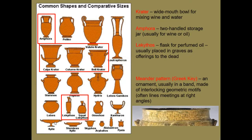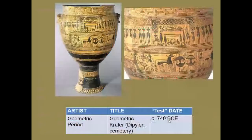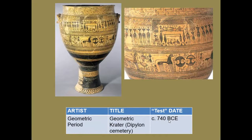The meander pattern — sometimes called the Greek key — is found on many early Greek examples. It's a pattern of right-angled lines moving in and out around each other, somewhat resembling old-fashioned keys. You can see it clearly in our first piece to know for the test: the Geometric period crater from the Dipylon cemetery. Although this form could be used for mixing wine and water, it has perforations at the bottom that would have allowed any liquid poured into it to drain straight into the ground.